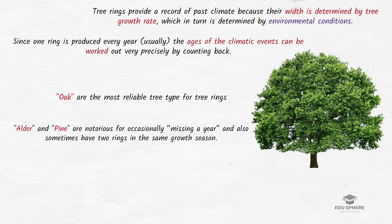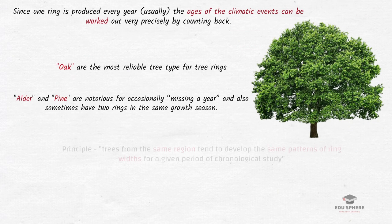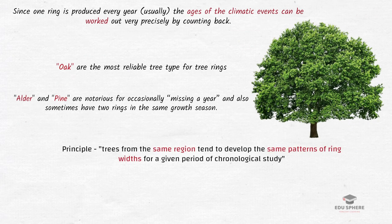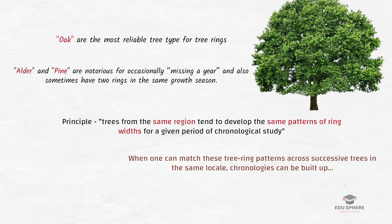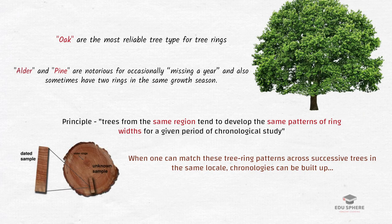So choosing the right sample is also important in this method of dating. The principle of tree ring dating is that trees from the same region tend to develop the same pattern of ring widths for a given period of chronological study. Researchers can compare and match these patterns ring for ring with patterns from trees which have grown at the same time in the same geographical zone. When one can match these tree ring patterns across successive trees in the same locale in overlapping fashion, chronologies can be built up both for entire geographical regions and for sub-regions as well.